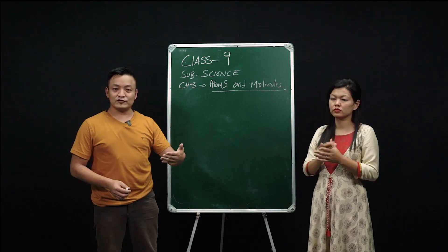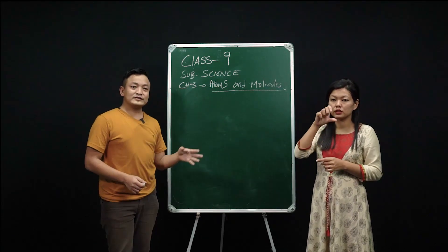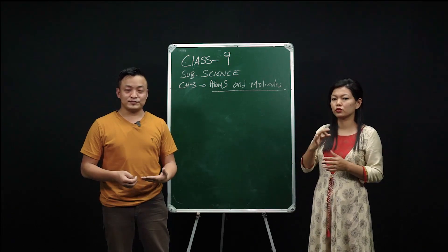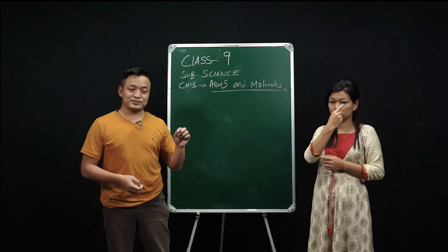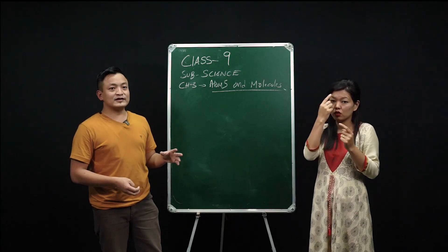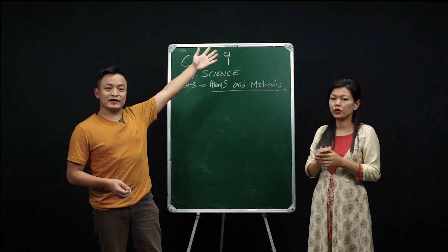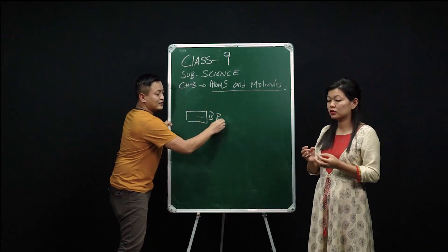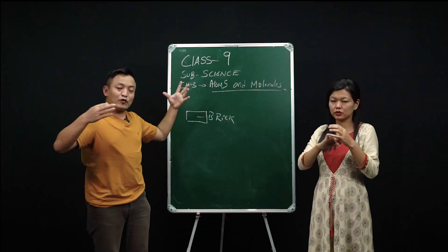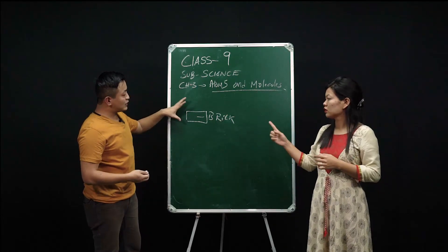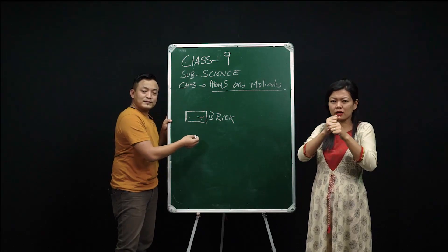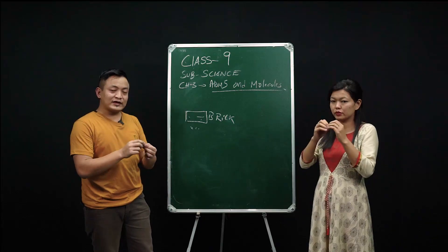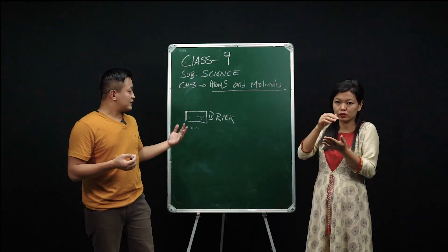Atoms and molecules are studied from Class 9 until Class 12 and even through your degree. Now, what is an atom? Atoms are the smallest particle — not divisible, not visible. These are the tiniest particles. Take this building as an example: construction starts from a small brick. A collection of bricks gives us a building. If we break that brick further, we get a powdery thing. Dividing further, at some point you get an object not visible to the naked eye — that is known as an atom.